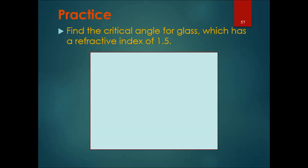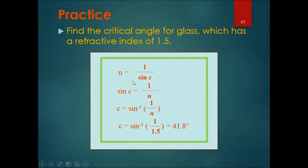Let's do a short practice. A simple one would be to find the critical angle for glass, which has a refractive index of 1.5. Please pause the video here and solve the question. Okay, let's go to the answer. N is equal to 1 over sin C. Therefore, if we move the 1 over to the N, it becomes sin C equals to 1 over N. And therefore, if we inverse the sin on both sides, C equals to inverse sin of 1 over N.